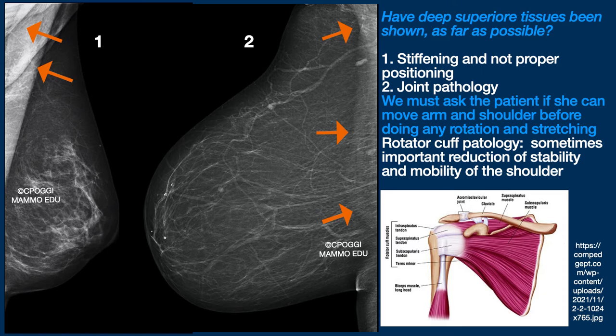The poor documentation of the superior tissues in image 2 is due to joint pathology. We have to consider the fact that pathologies such as rotator cuff disease are common enough in women. It could lead to sometimes significant reduction in shoulder stability and mobility. We have to ask the patient if she can move her shoulder and arm before doing any movement, especially if we notice a certain rigidity.